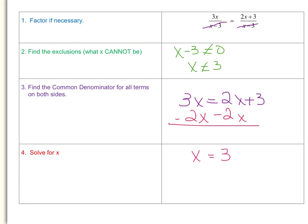Is 3 our solution for x? We need to look back at our exclusion, which says x cannot equal 3. Therefore, 3 is not our solution for x, and there is no solution for this equation.